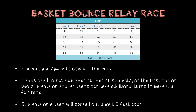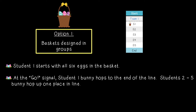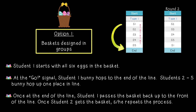Students on a team will spread out about five feet apart. Option one: baskets designed in groups. Student one starts with all six eggs in the basket. At the go signal, student one bunny hops to the end of the line while students two through five bunny hop up one place in line. Once at the end, student one passes the basket back up to the front. Once student two gets the basket, he or she repeats the process. This repeats until all team members have hopped the course, and the relay is completed after the basket is passed back up to the student at the front.